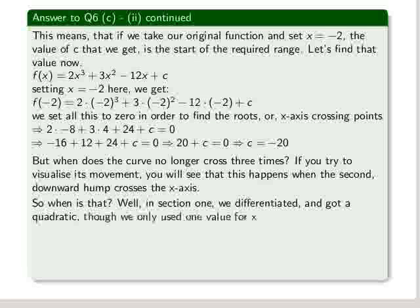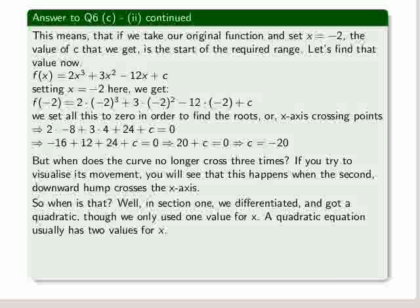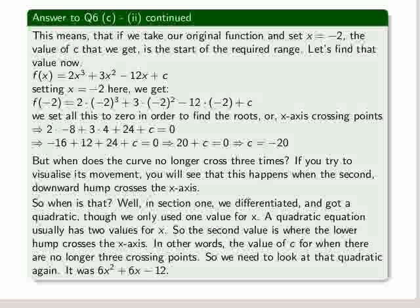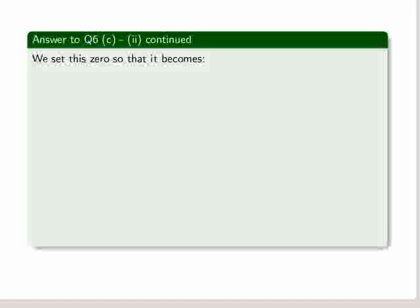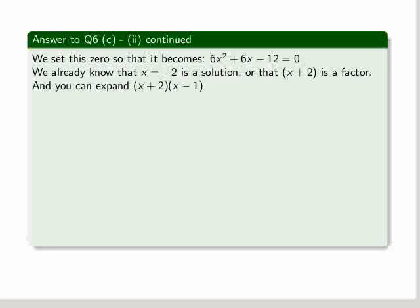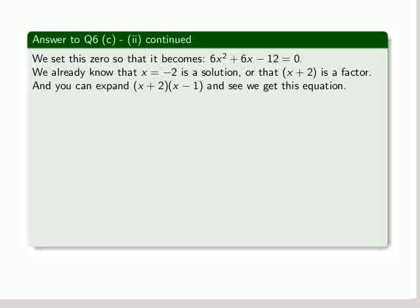Well, in section one we differentiated and got a quadratic, though we only used one value for x. A quadratic equation usually has two values for x. So the second value is where the lower hump crosses the x-axis. In other words, the value of c for when there are no longer three crossing points on the x-axis. So we need to look at that quadratic again. It was 6 times x squared plus 6x minus 12. So we set this to zero so that it becomes, as given, we already know that x minus 2 is a solution, or that x plus 2 is a factor. And you can expand x plus 2 multiplied by x minus 1. And we see that we get this equation, though divided by 6. If we multiply across by 6, then we get the exact equation.